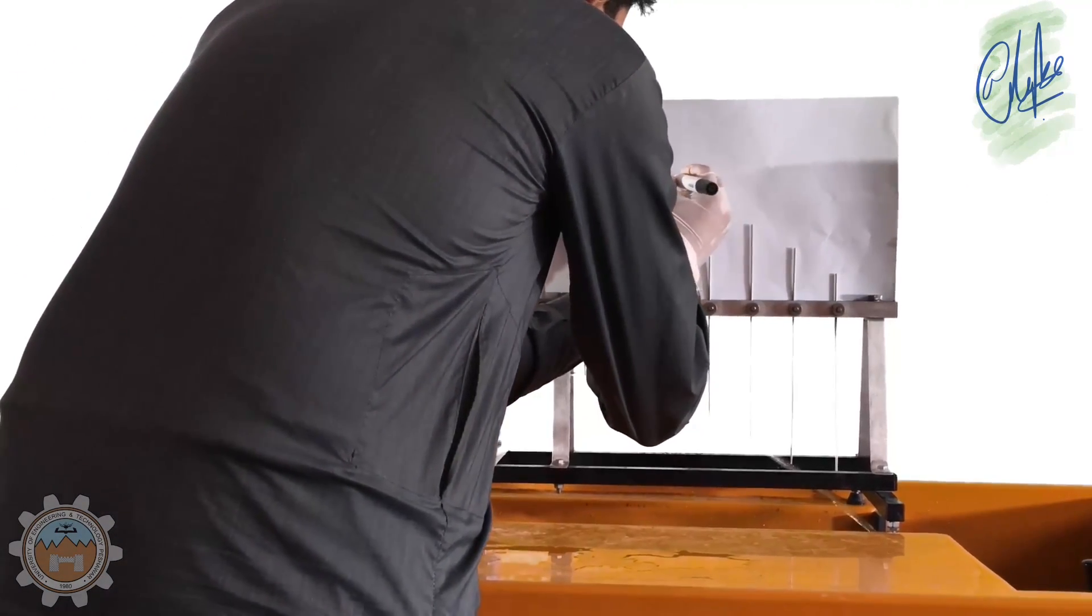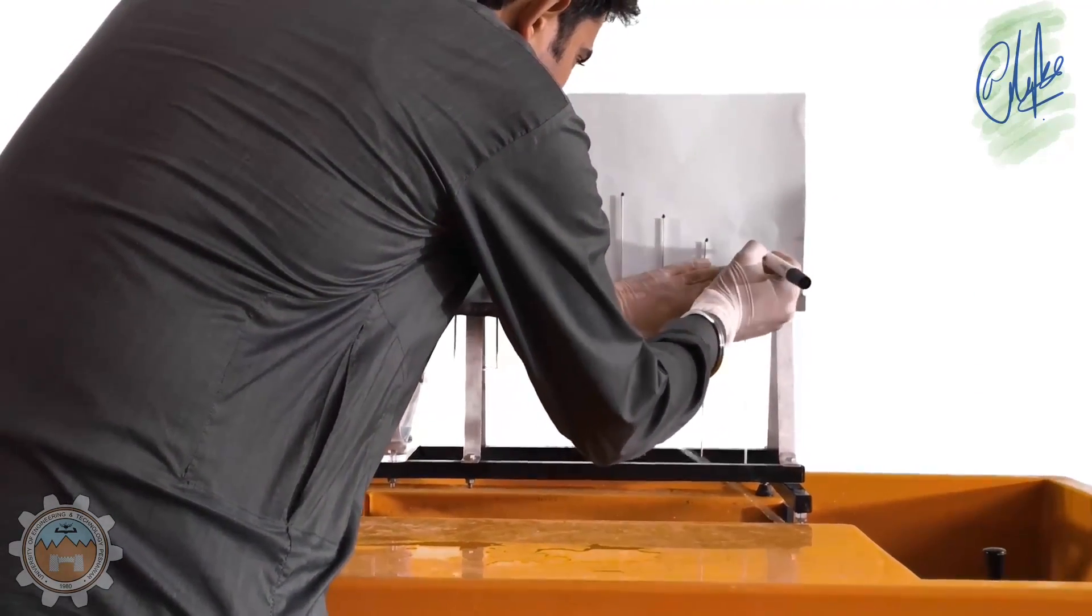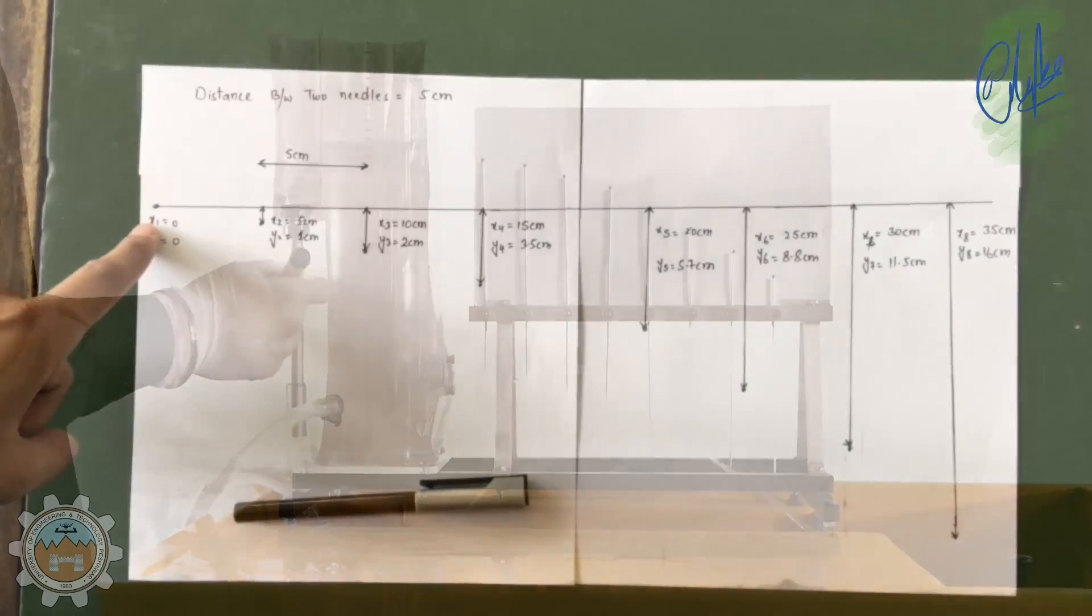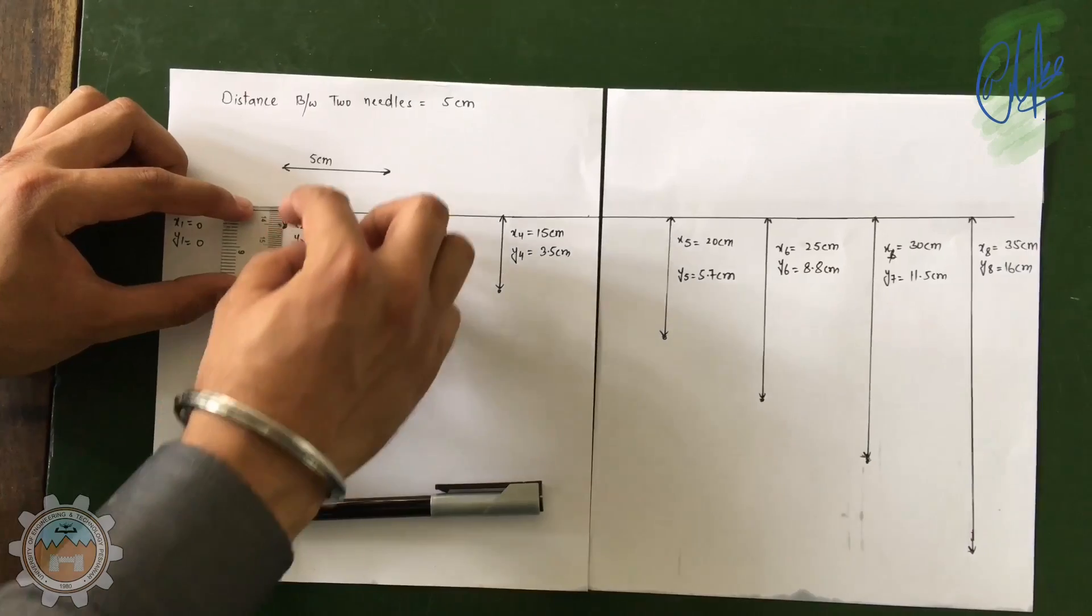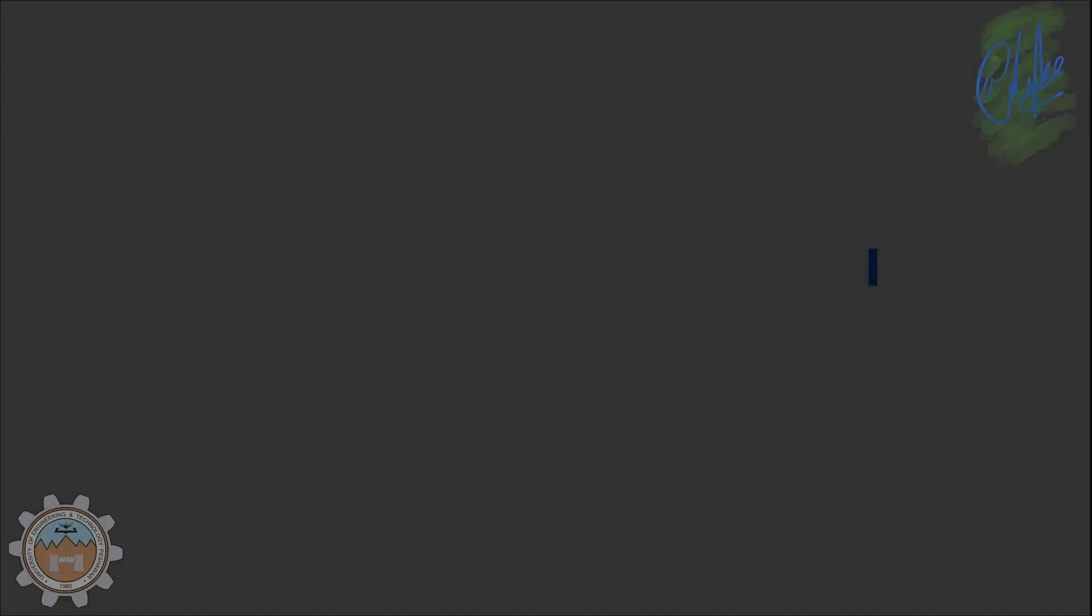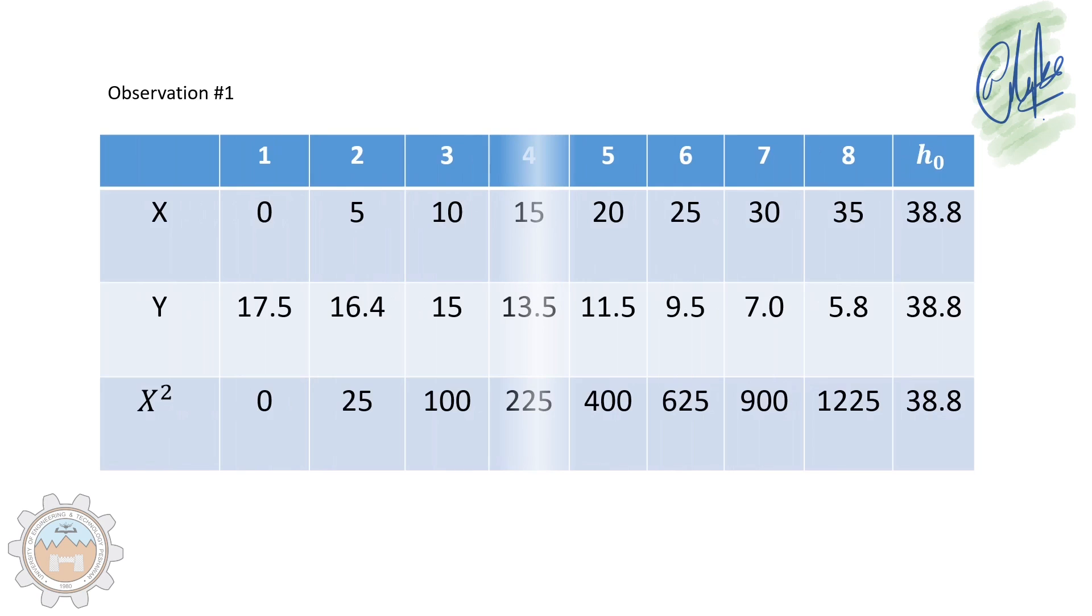At the time we couldn't find a full A3 sheet so we used two A4 sheets. Try to use a complete one paper. The distance between each point needle is 5 cm and all of these vertical lines are being drawn to one horizontal reference line at the top.